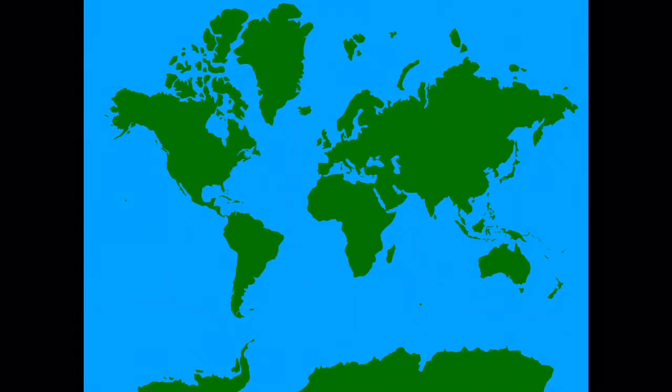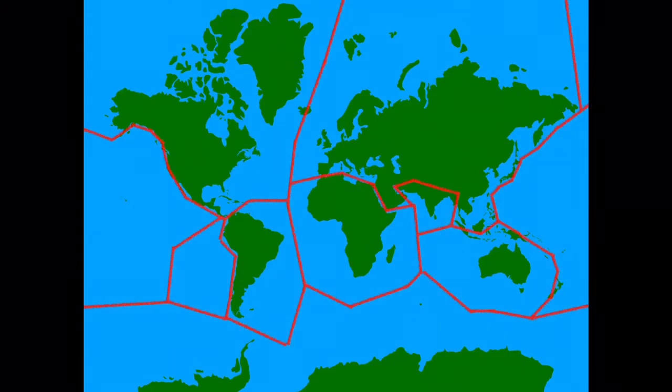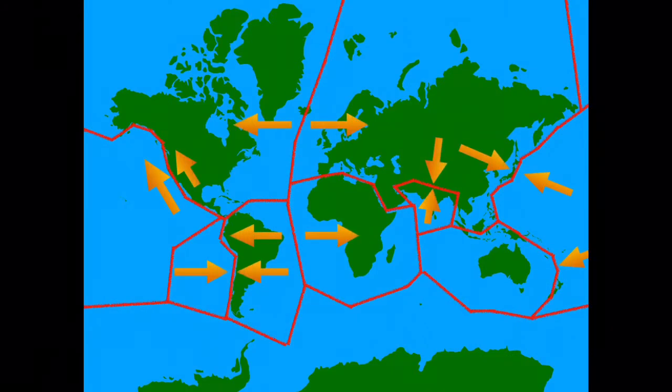The earth's crust is divided into tectonic plates which float on the semi-molten mantle. These plates meet at plate boundaries and generally interact in three different ways: plates can separate at constructive boundaries, collide at destructive boundaries, and slide past one another at passive boundaries.